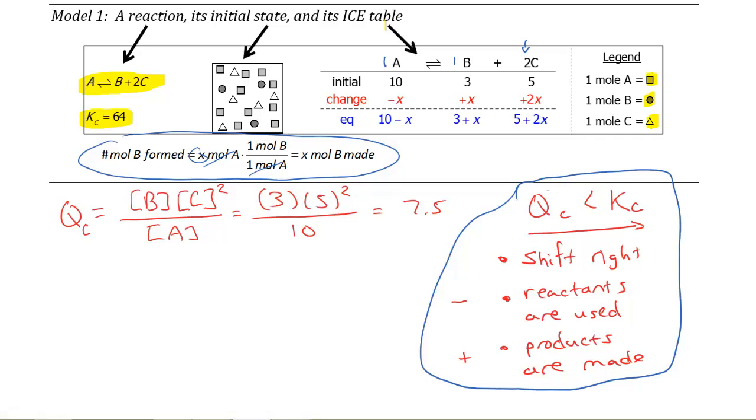The only thing that's left to do in your ICE table is to add them up to see where we're going to be at equilibrium. So this last row, the equilibrium row, is really just a statement of 10 plus negative x, 3 plus positive x, 5 plus 2x. I now have at my disposal a very nice set of numbers that are available for me to use in equilibrium.